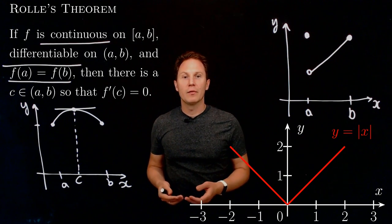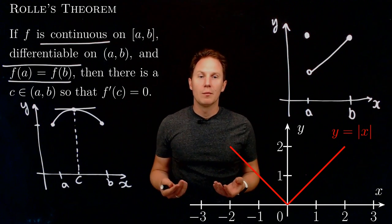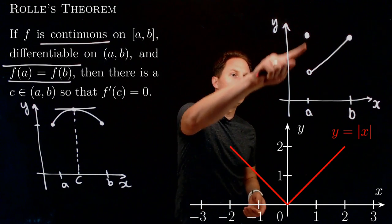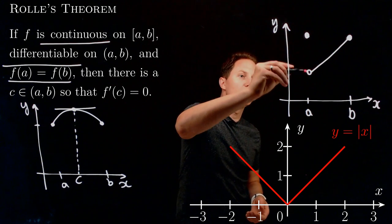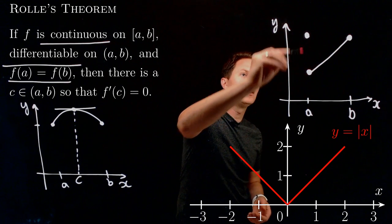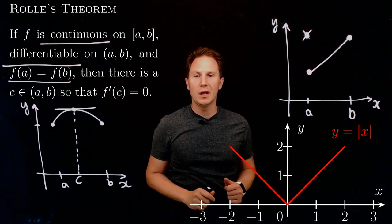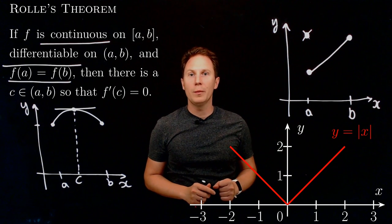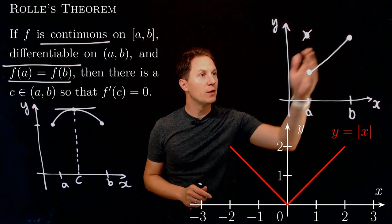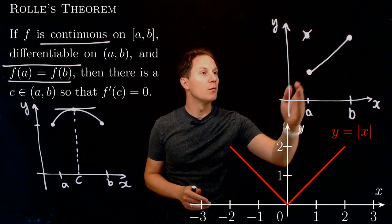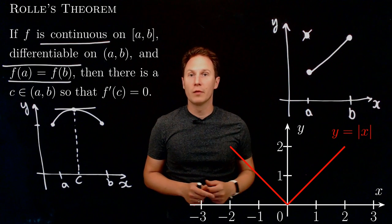Finally, having the same endpoint values is also important. You could take a function that is continuous on the closed interval [a, b] and differentiable on the open interval (a, b), but because the endpoint values are not the same, it's possible that there won't be any points between a and b at which the derivative would be zero.